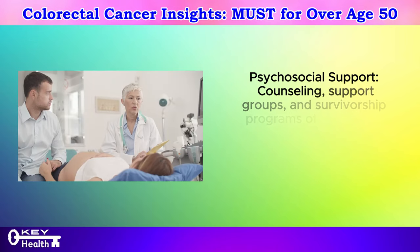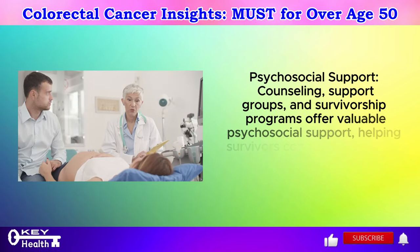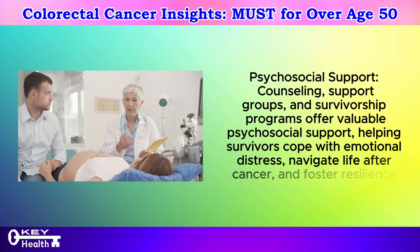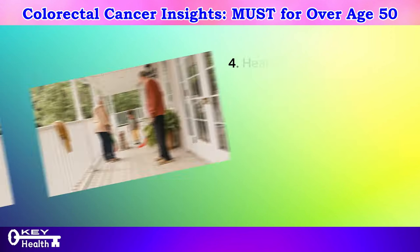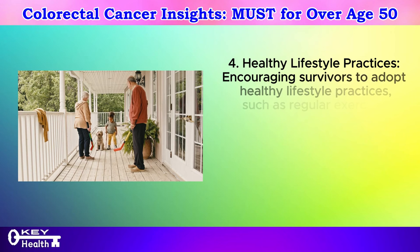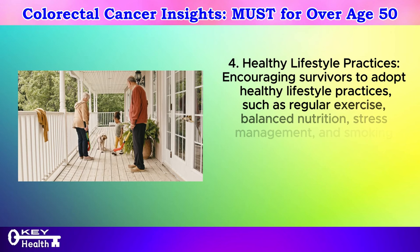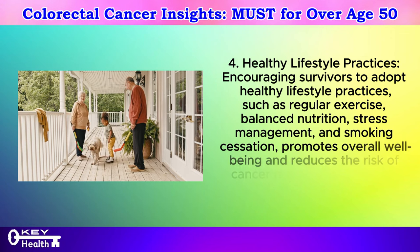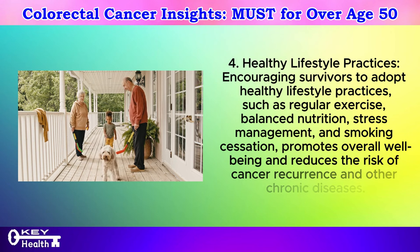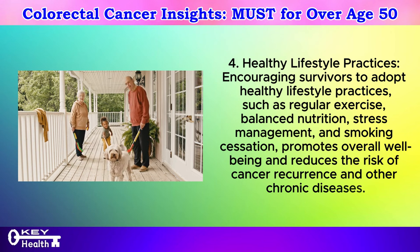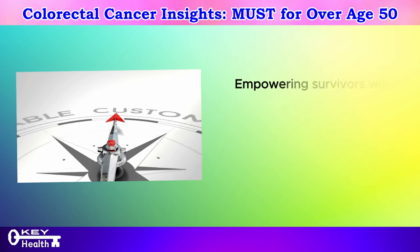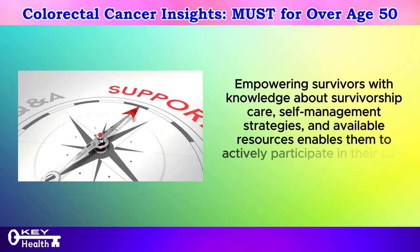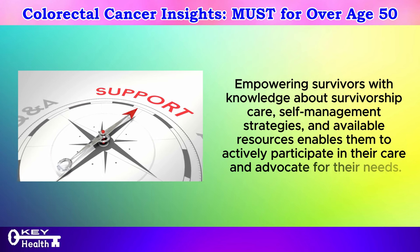Strategy 3: Psychosocial support. Counseling, support groups, and survivorship programs offer valuable psychosocial support, helping survivors cope with emotional distress, navigate life after cancer, and foster resilience. Strategy 4: Healthy lifestyle practices. Encouraging survivors to adopt healthy lifestyle practices — such as regular exercise, balanced nutrition, stress management, and smoking cessation — promotes overall well-being and reduces the risk of cancer recurrence and other chronic diseases. Strategy 5: Education and empowerment. Empowering survivors with knowledge about survivorship care, self-management strategies, and available resources enables them to actively participate in their care and advocate for their needs.